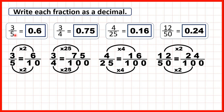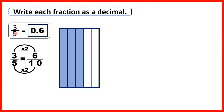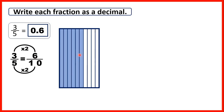So let's have a look at the first question. We had three-fifths. We found that that was equivalent to six-tenths, and notice the same amount of the rectangle or fraction bar is shaded blue. But splitting it into tenths is important because tenths have a decimal place value, so we could write that as zero point six.